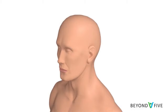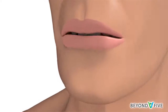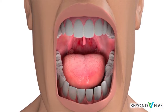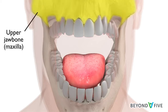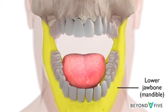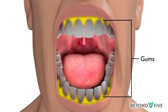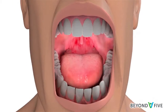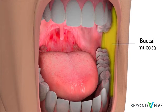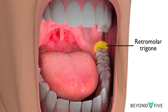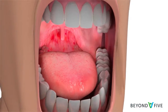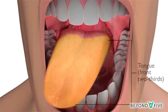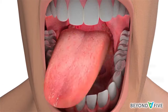The oral cavity or mouth contains many different structures. These include the upper jawbone, also known as the maxilla, the lower jawbone, also known as the mandible, and the gums and teeth, the hard palate, inside of the cheeks called the buccal mucosa, and the area behind the wisdom teeth called the retromolar trigone, the front two-thirds of the tongue, and the floor of mouth.